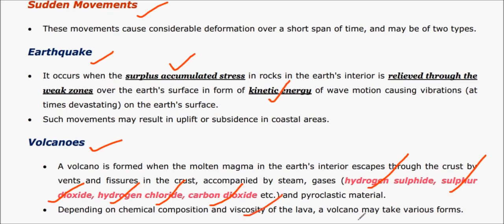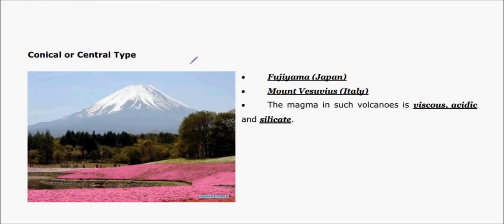Gases are liberated during volcanic eruptions, and depending on the viscosity of the lava, volcanoes are characterized into different types. The first one is conical or central type. The best example is Fujiyama in Japan and Mount Vesuvius in Italy.